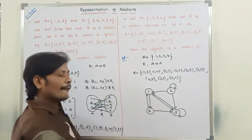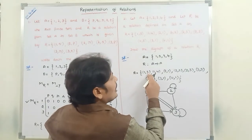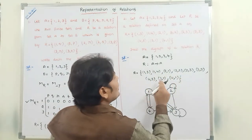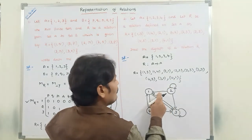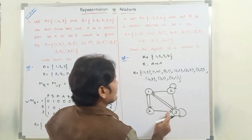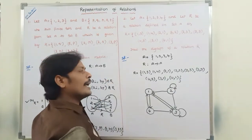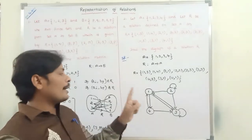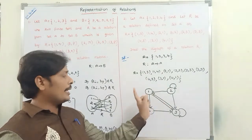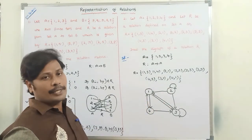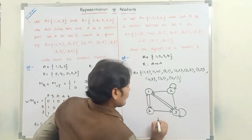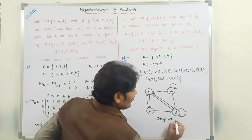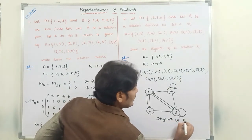So how many ordered pairs are there? There are 9 ordered pairs, which means 9 edges in the digraph of relation R. For each and every ordered pair, there is one edge. This is called the digraph of relation R.